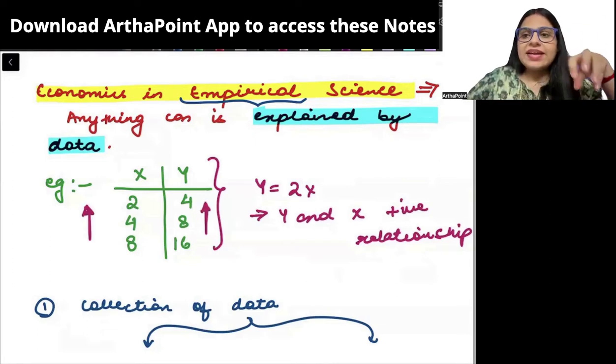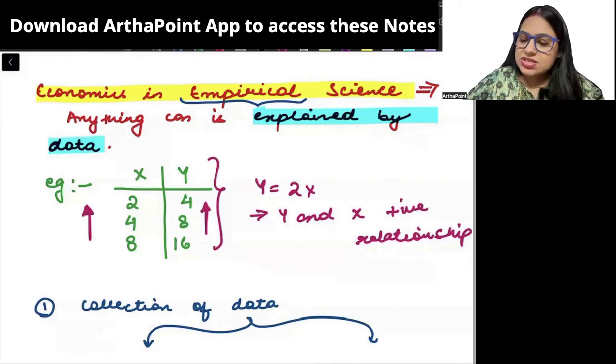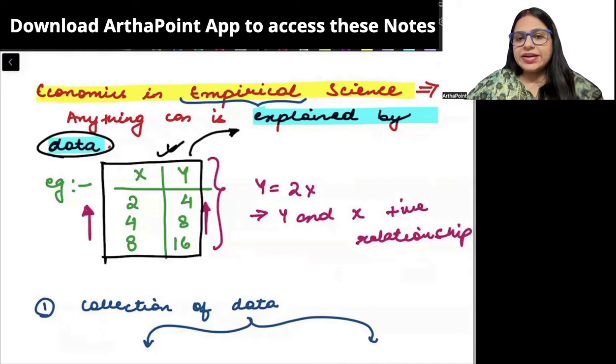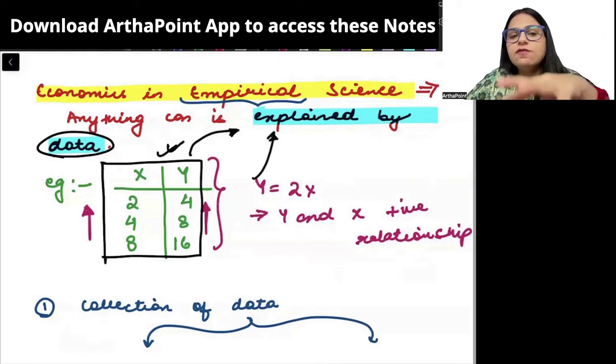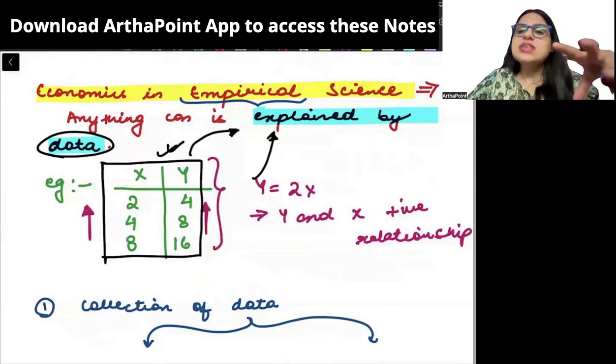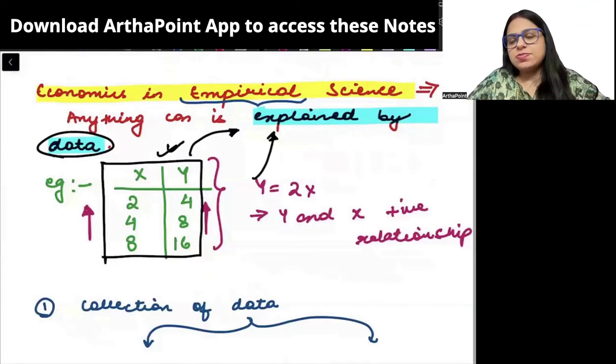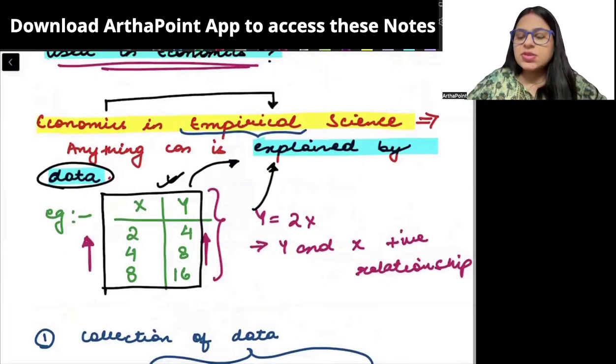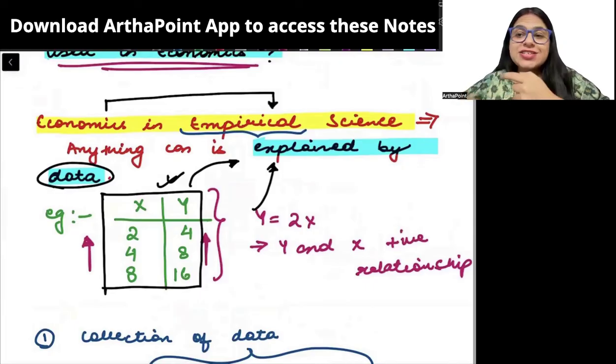Anything that can be explained by data, if by looking at the data I am able to interpret that data and understand it through the data, then we call that empirical science because we are explaining it using data.